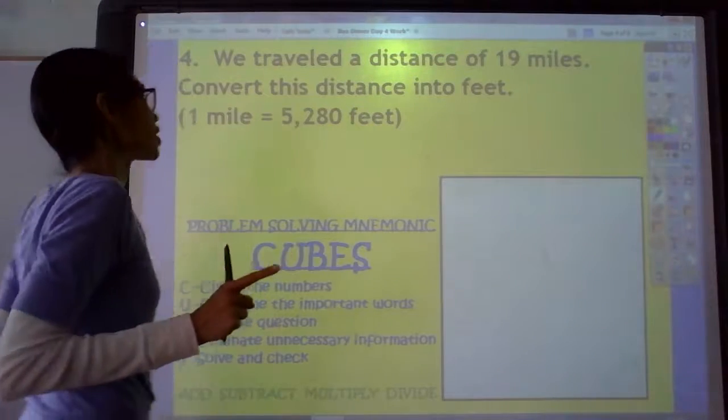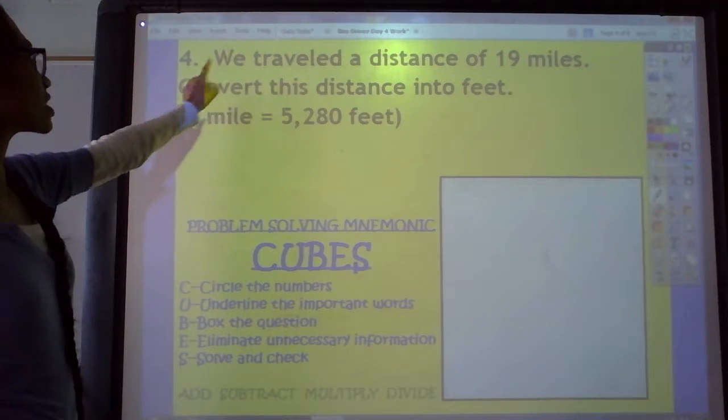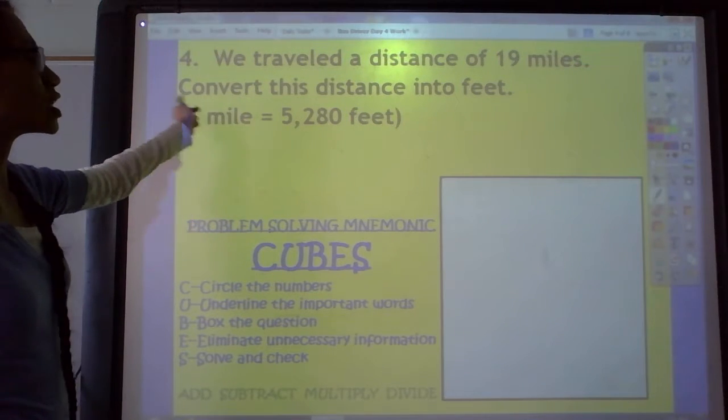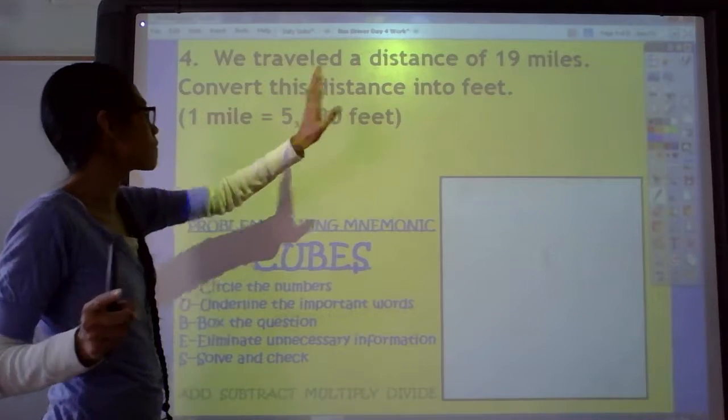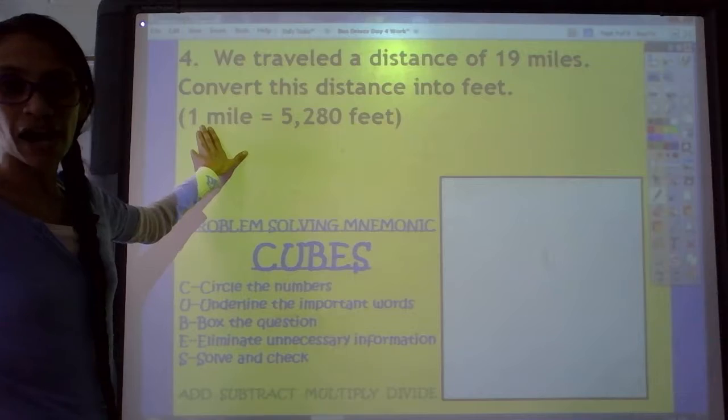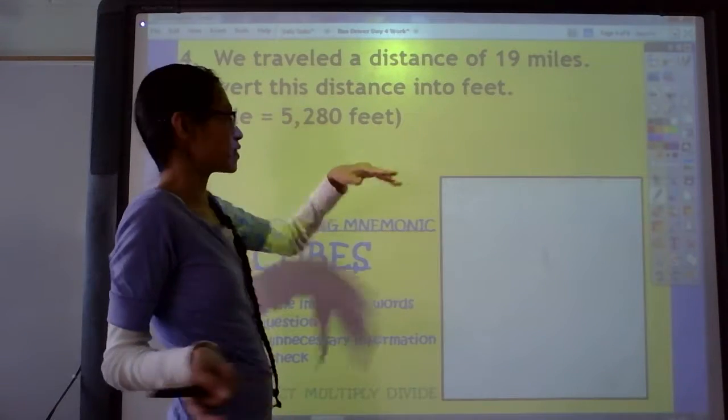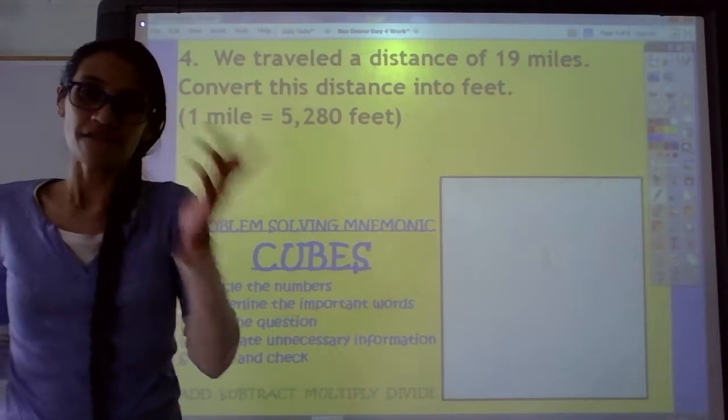So let's start by reading the question. Read it with me. It says, we traveled a distance of 19 miles. Convert this distance into feet. Here's your conversion factor. It says one mile equals 5,280 feet.